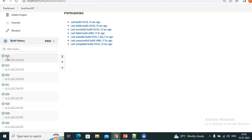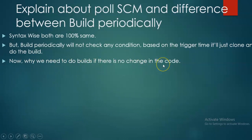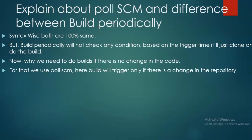It is compiling the same code — there is no change at all. If there is no change in the code, why do we need to build? It is useless. That's why we use Poll SCM. Poll SCM will check the repository — from one build to another build, if there is any change in the repository, then only it will trigger a build.